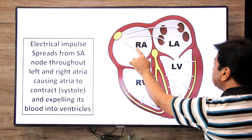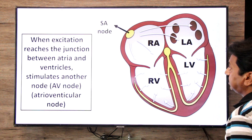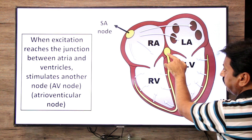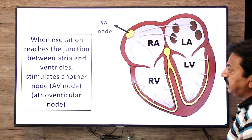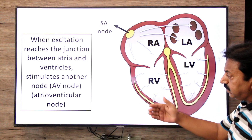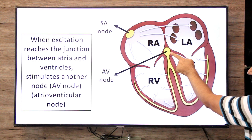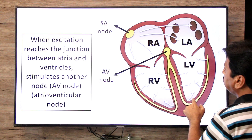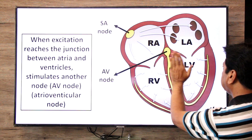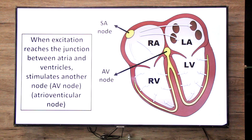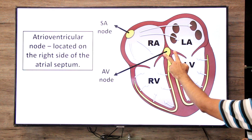After the SA node, the next component is the AV node. When excitation reaches the junction between the atria and the ventricles, it stimulates the AV node — the atrioventricular node. The AV node is located on the right side of the interatrial septum. It acts as a junction, because after the interatrial septum, the interventricular septum begins. The AV node is an electrical relay station between the upper and lower chambers of the heart — it relays the signal forward.